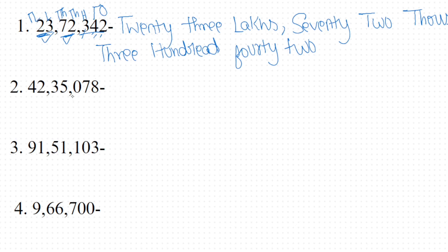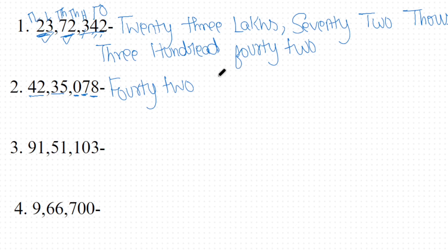Next is 4, 2, 3, 5, 0, 7, 8. So 4 and 2 are in the lakh position — 42 lakhs. 3 and 5 are in the thousands position — 35,000. 0 is in the hundreds position, so we don't need to write anything for it.